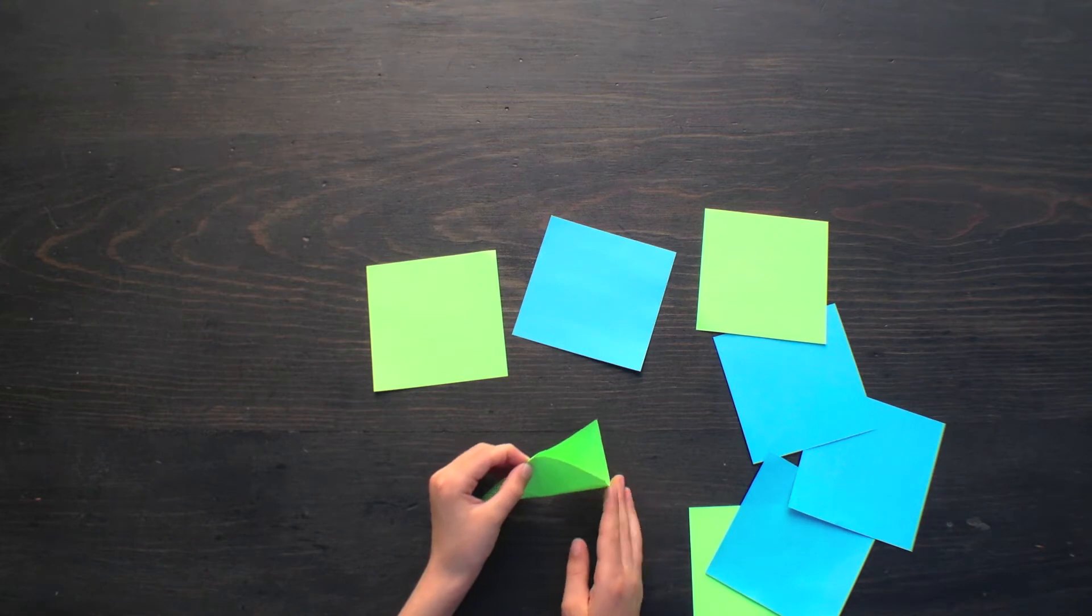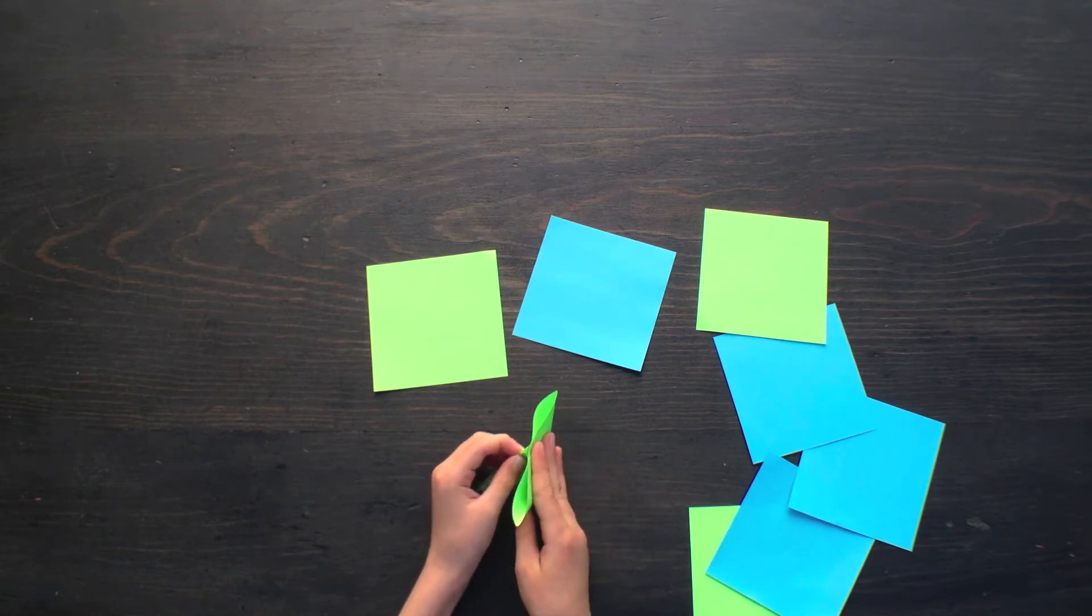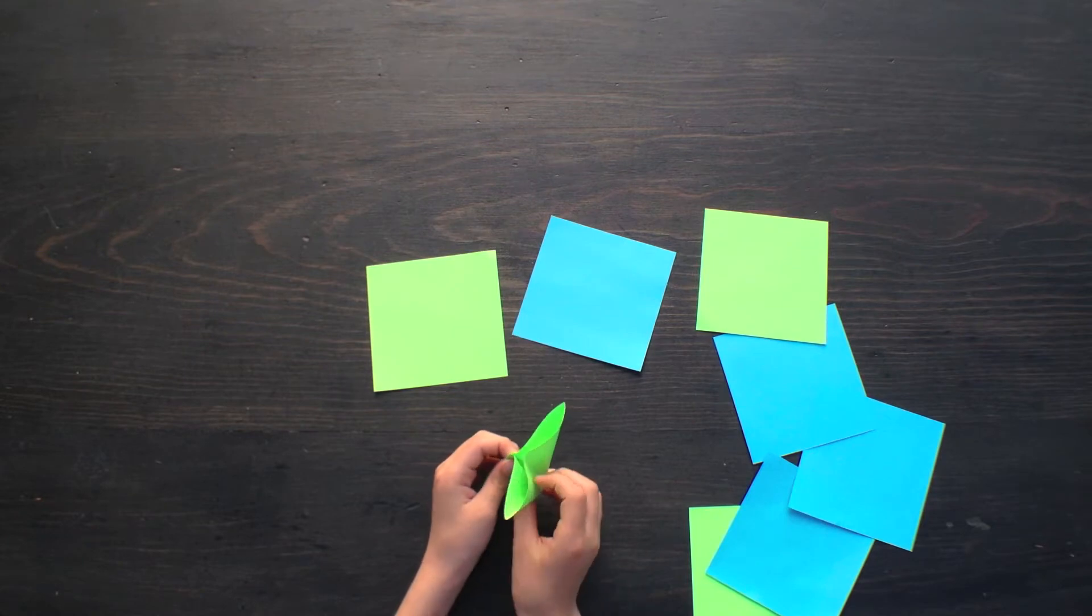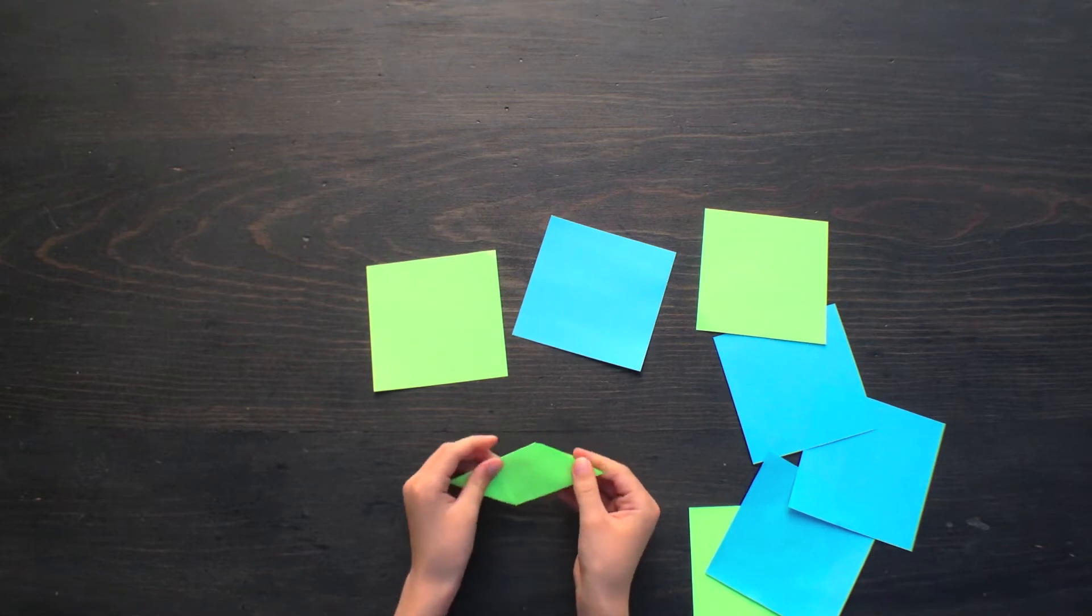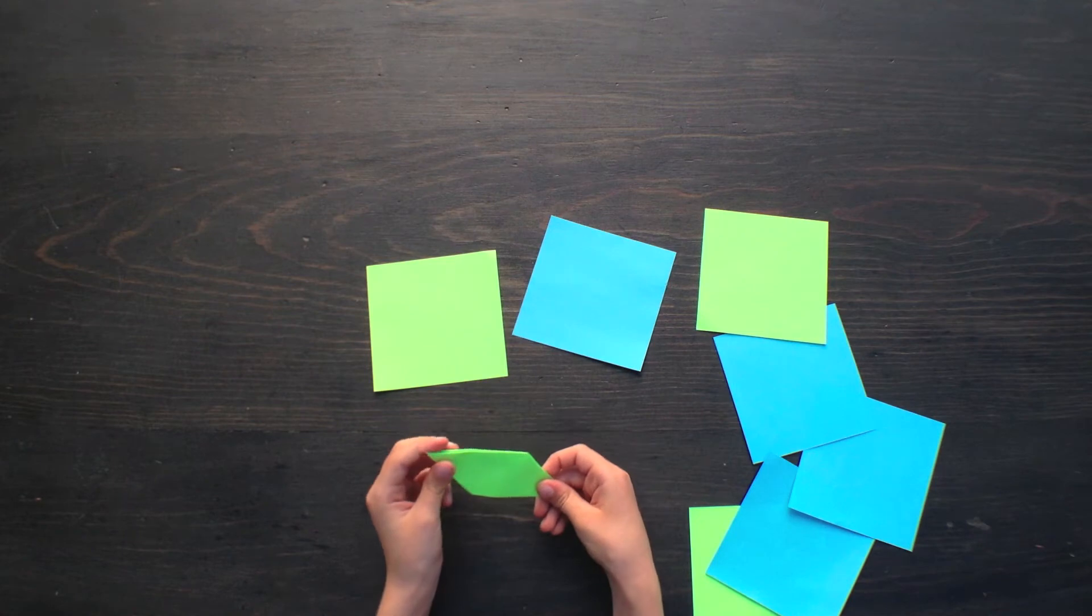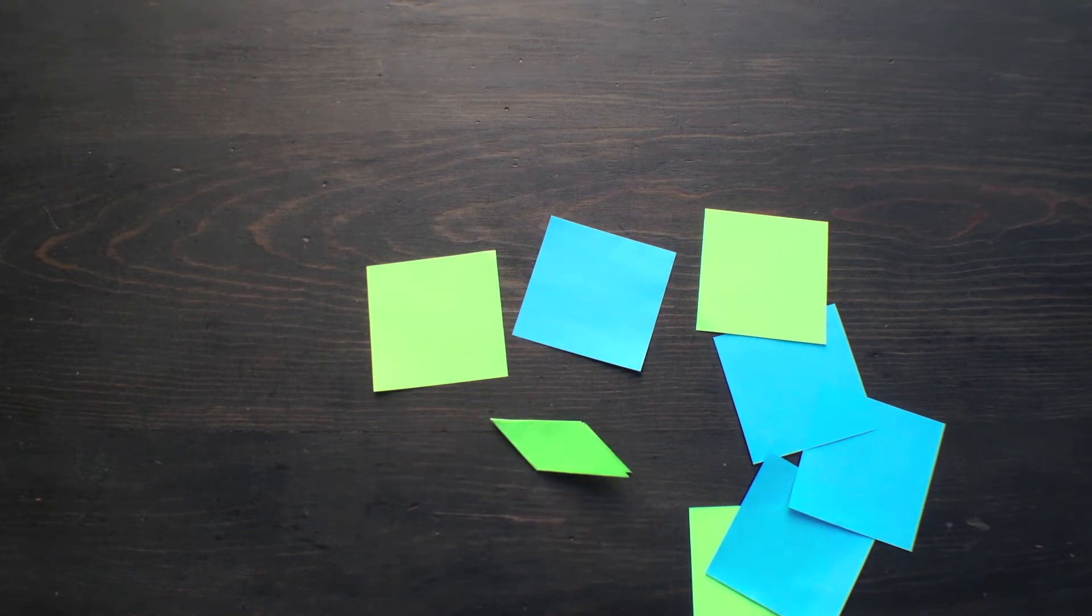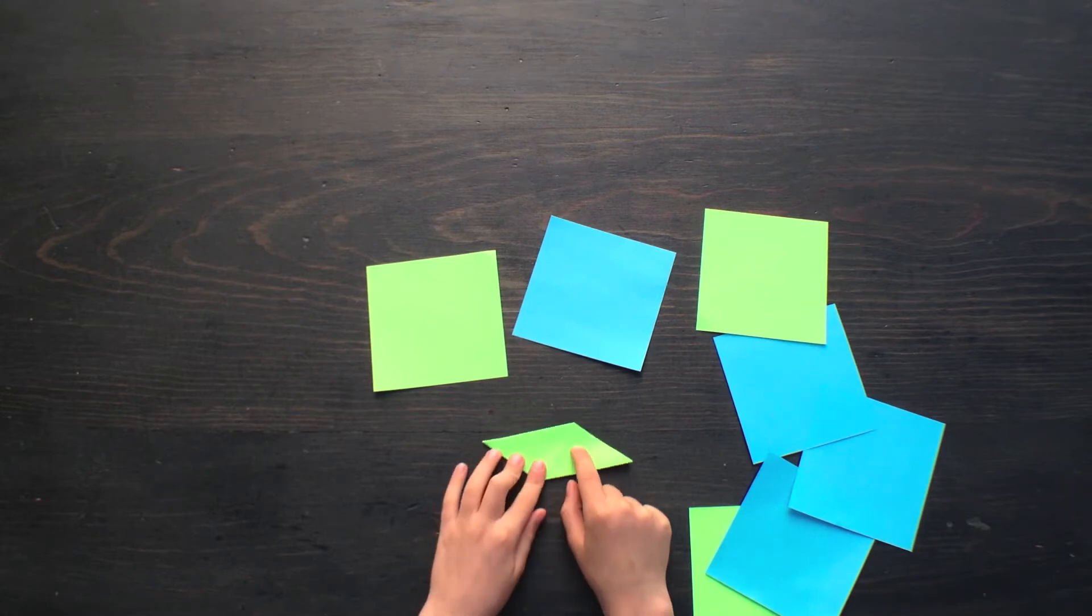See these two lines? Fold along them and push this in, and do this and crease it. There's one of the pieces that you'll have to interlock together. You have to do this seven more times, and then you'll have eight pieces total.